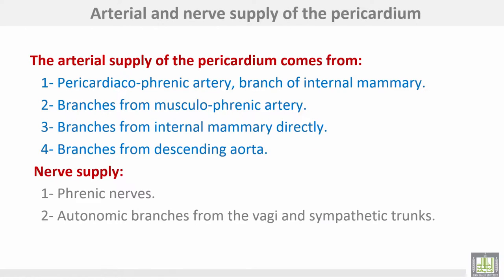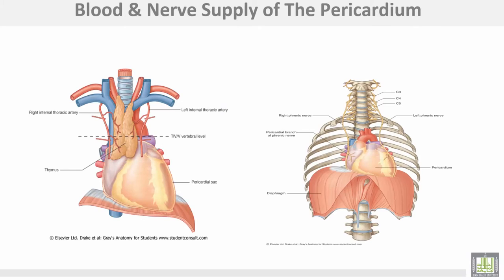Arterial and nerve supply of the pericardium. Arterial supply comes from the pericardiacophrenic artery, a branch from the internal thoracic artery. Branches also arise from the musculophrenic artery, itself a branch of the internal thoracic artery, and directly from the internal thoracic artery, as well as branches from the descending aorta. Nerve supply comes from the phrenic nerves and autonomic branches from both vagi and sympathetic trunks.